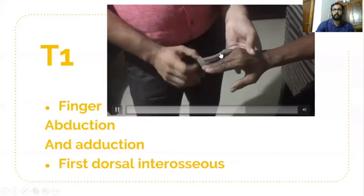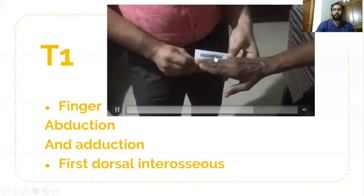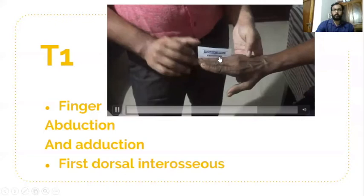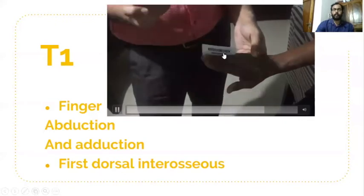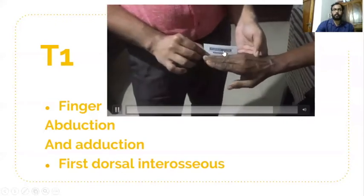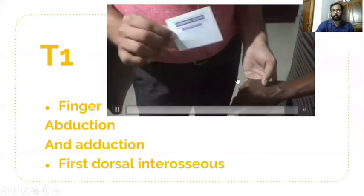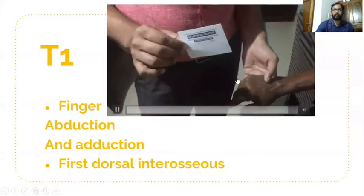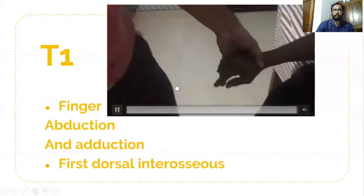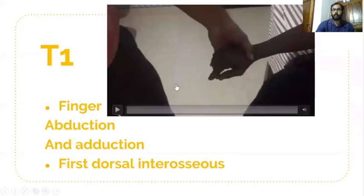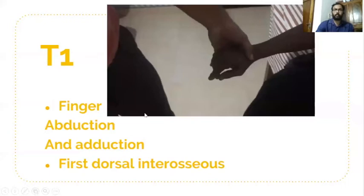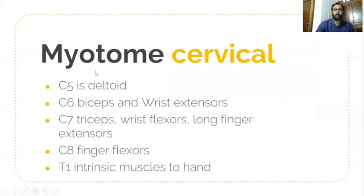For C8 and T1, which involve ulnar nerve distribution, a card is placed between the little finger and ring finger and pulled out against the patient's resistance — this tests finger adductors. Both finger abduction, finger adduction, and the first dorsal interosseous are checked for T1.